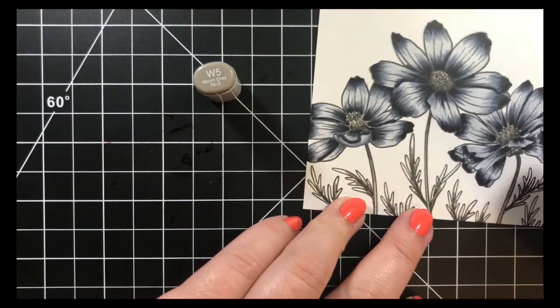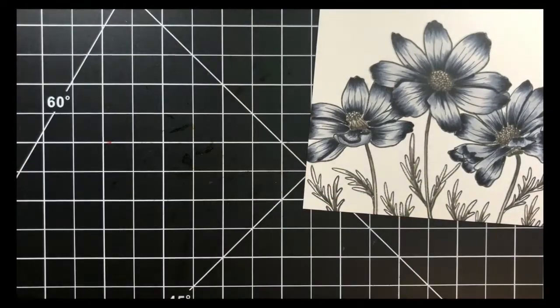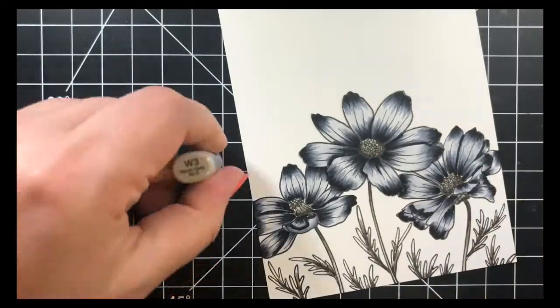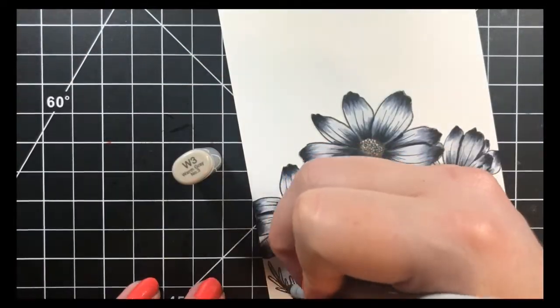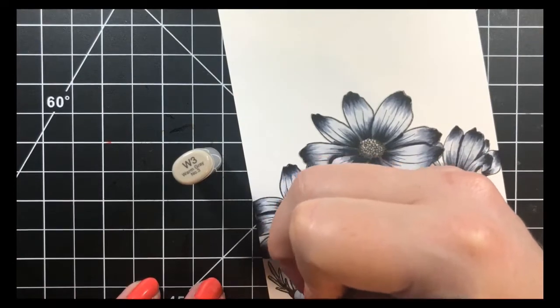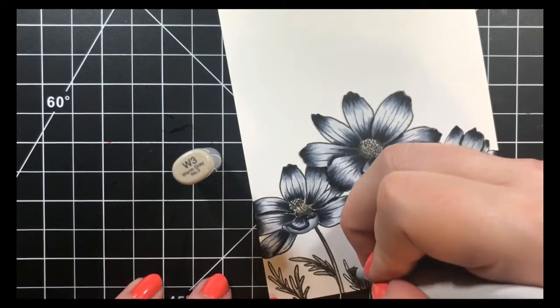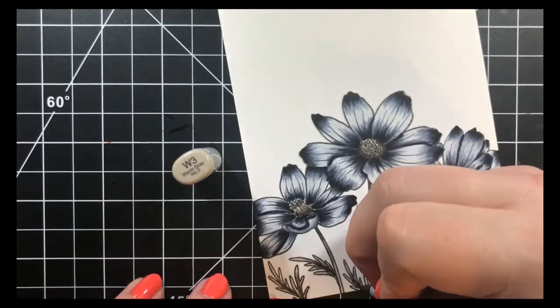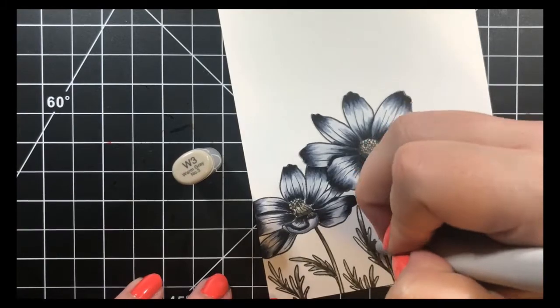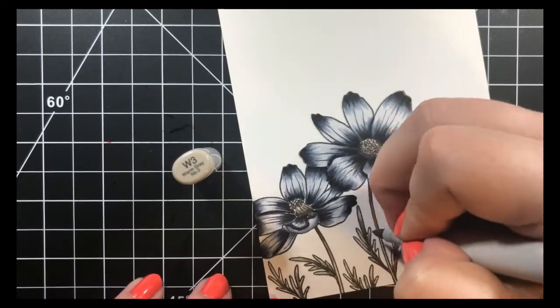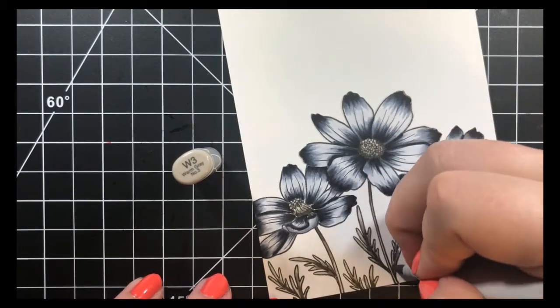Then I'll go in with my W3 and go over the entire leaf. Now these are really tiny, so you want to make sure that you're using just the tip of your marker. There are some areas that I did kind of go out of the lines a little bit, but this is a light enough color where I can go in with my colorless blender and just fill in those areas once I'm done coloring.